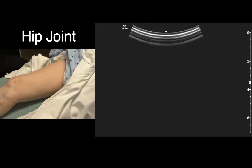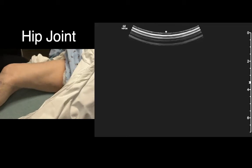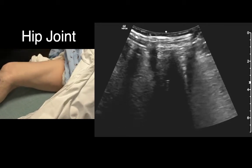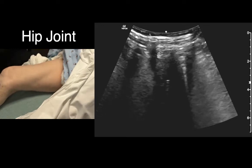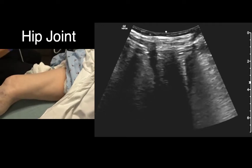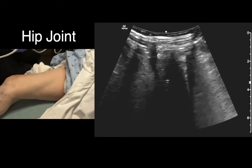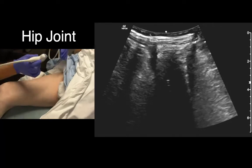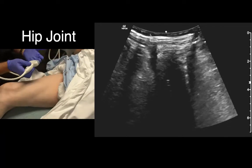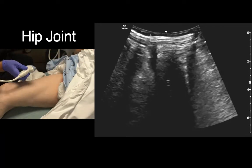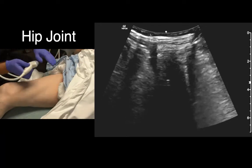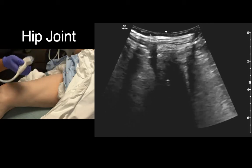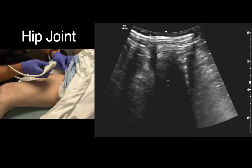The first structure we're going to look at in the lower extremity is the hip joint. This is very PEDS relevant. If it's a little kid, we could probably use the linear probe. In adults or bigger kids, we often use the curve because it gives us a wider view of the whole joint space.